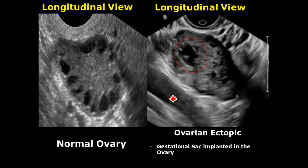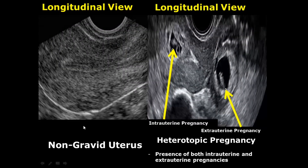Ovarian ectopic is a very rare form of ectopic pregnancy in which the gestational sac is located inside the ovary. Here we can notice a gestational sac with a small embryo located within the ovary. Heterotopic pregnancy occurs when there is both an intrauterine and an extrauterine pregnancy simultaneously — one gestational sac is in the normal location inside the uterine cavity, whereas the other gestational sac is around the cervical region, which is an abnormal location.